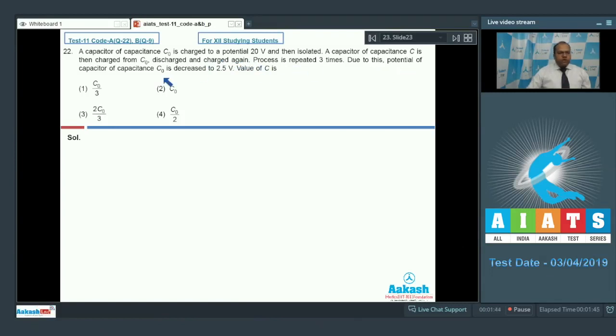Due to this, potential of capacitor of capacitance C0 is decreased to 2.5V, the value of C is. So let initially the potential on the capacitor C0 is V0 that is 20V and the capacitance is C0. So when this capacitor is connected to a neutral capacitor, then the common potential is given by total charge that is C0 into V0 divided by C plus C0.